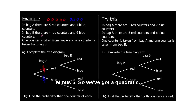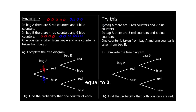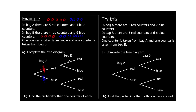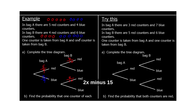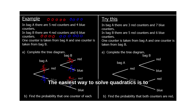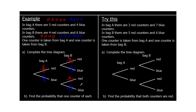In bag B, there are four red counters and six blue counters. So the probability of getting a red counter is four out of ten. Four out of ten red, and that's going to be four out of ten regardless of what we got in bag A — that's not going to make a difference. So both branches here are the same. The probability of getting a blue from bag B is six out of ten, and again that's the same regardless of what we picked out of bag A. What we picked out of bag A does not affect what we pick out of bag B. So that is our tree diagram completed.